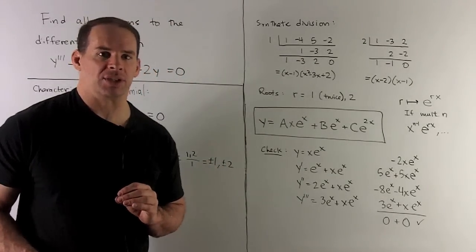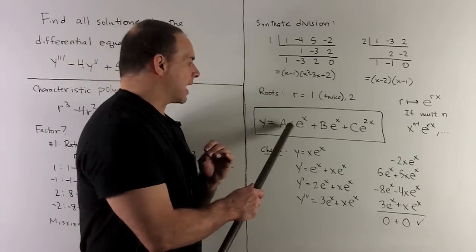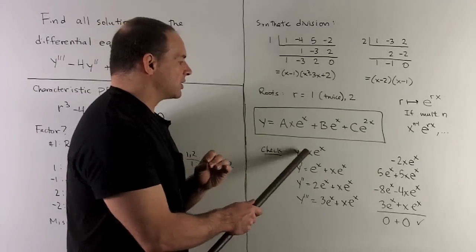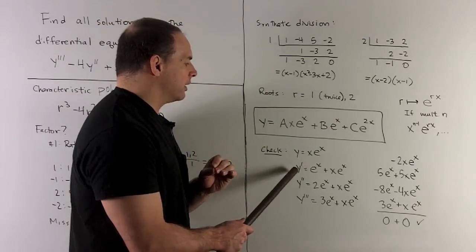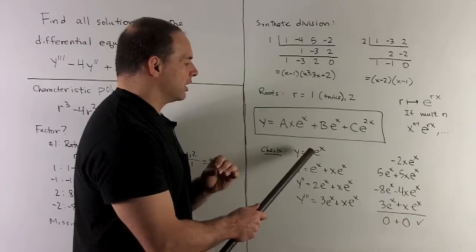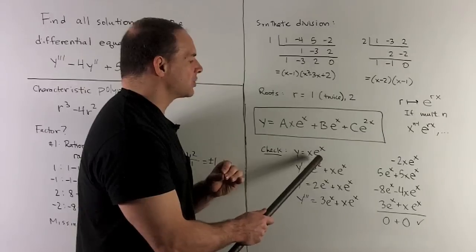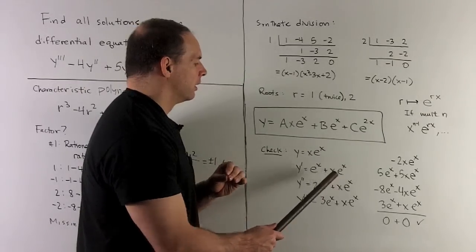Let's just check one piece of this. How about we check the x e to the x part? So why is x e to the x? We take the derivative. What happens? We have a product rule, so it's going to give me e to the x plus x times the derivative of e to the x, which is e to the x. We continue.